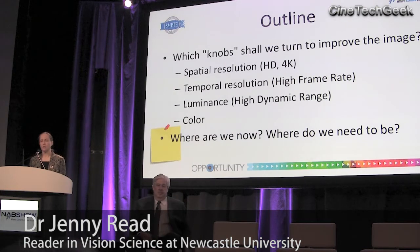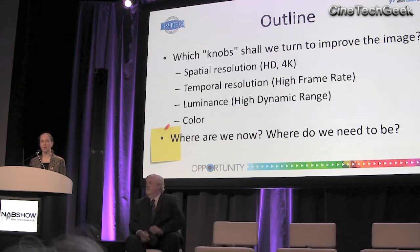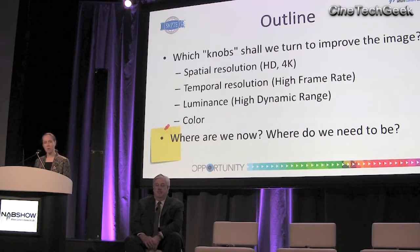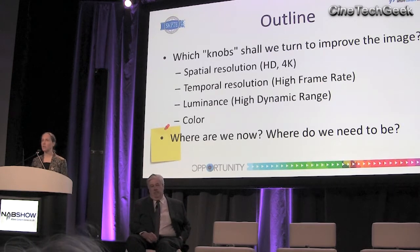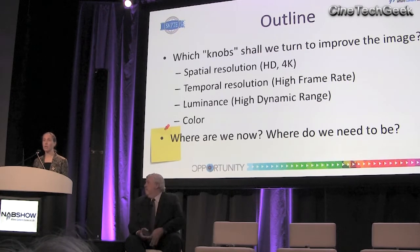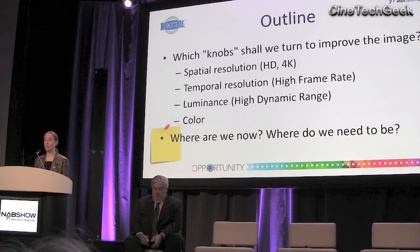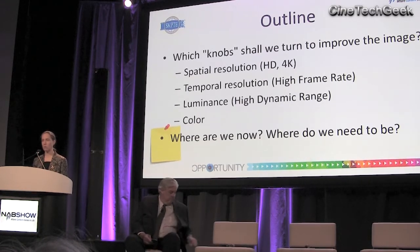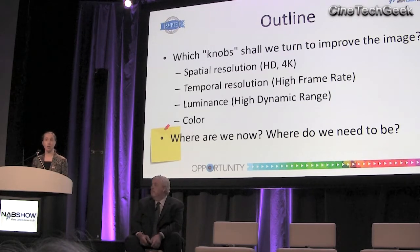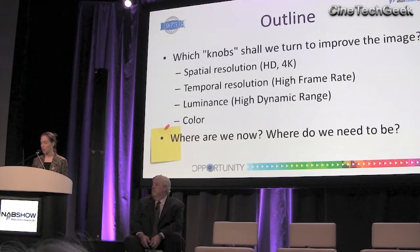The brief I was given for this session was to consider which knobs they might turn to improve the quality of a visual image. I'll talk in my presentation today about four possible knobs. For each one, I'm going to try to do a back-of-the-envelope calculation, taking into account what we know about the human visual system, to consider how far we need to turn that knob in order to reproduce reality as far as the human visual system is concerned. Whether reproducing reality is the right thing to be doing from an artistic or aesthetic point of view is a different question, and one I won't touch on.